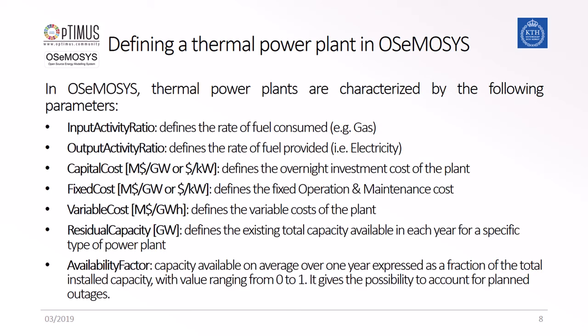When building a model in OSeMOSYS there are a few parameters that we need to consider. The first is the input activity ratio — this is the relationship between the power plant technology and input fuel, in our example natural gas. The output activity ratio is the relationship between the power plant technology and output fuel, in our example electricity. The capital cost, fixed cost, and variable cost are the cost parameters: capital cost is the investment cost per capacity unit, variable cost is the cost per produced energy unit, and fixed cost is the annual cost per capacity unit.